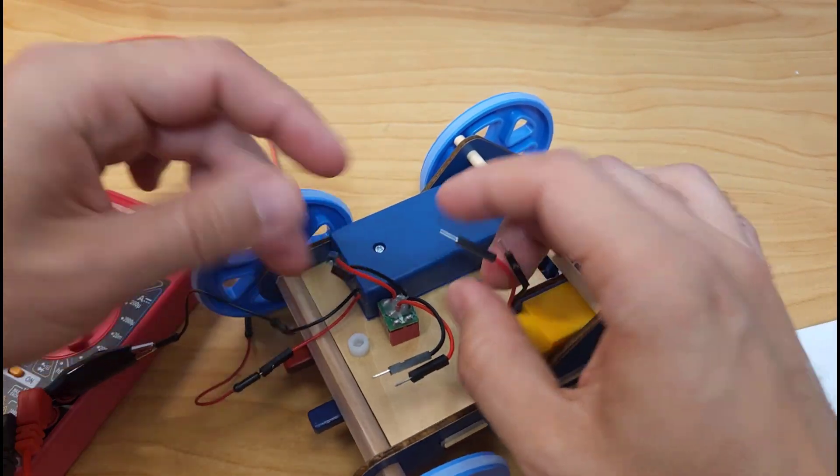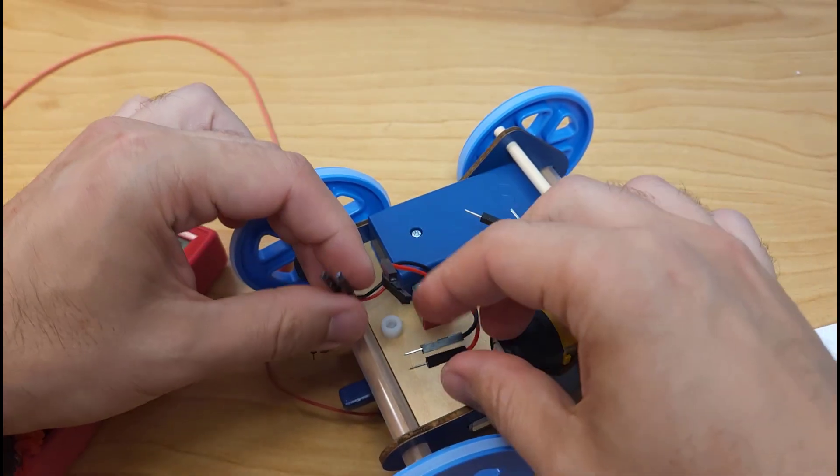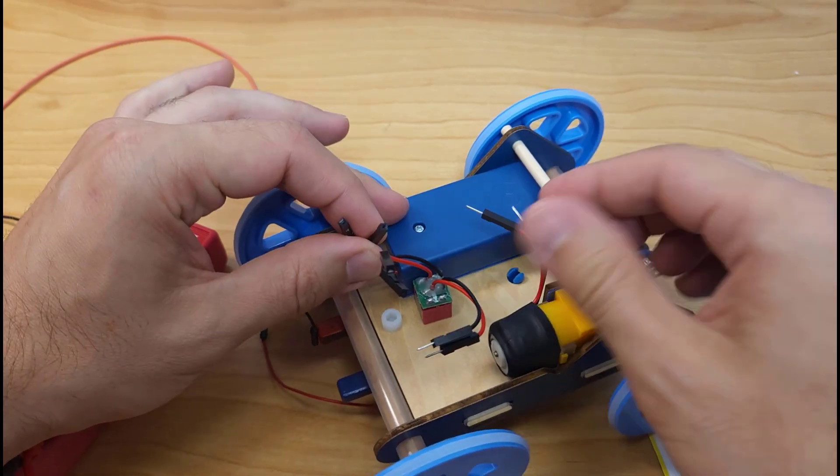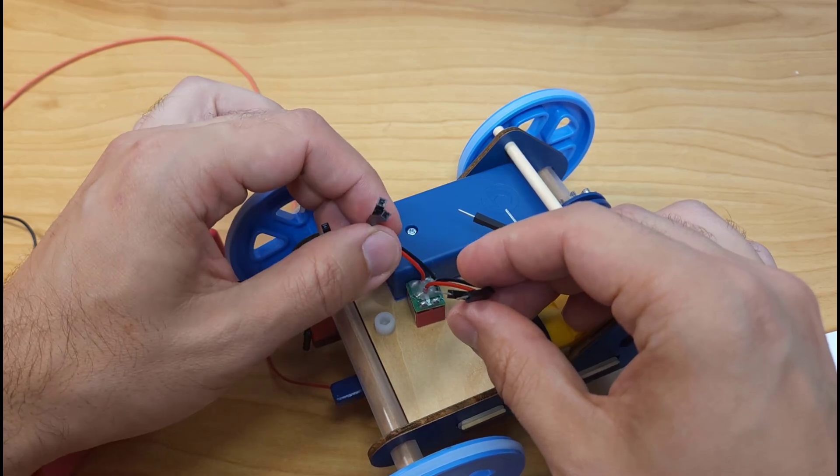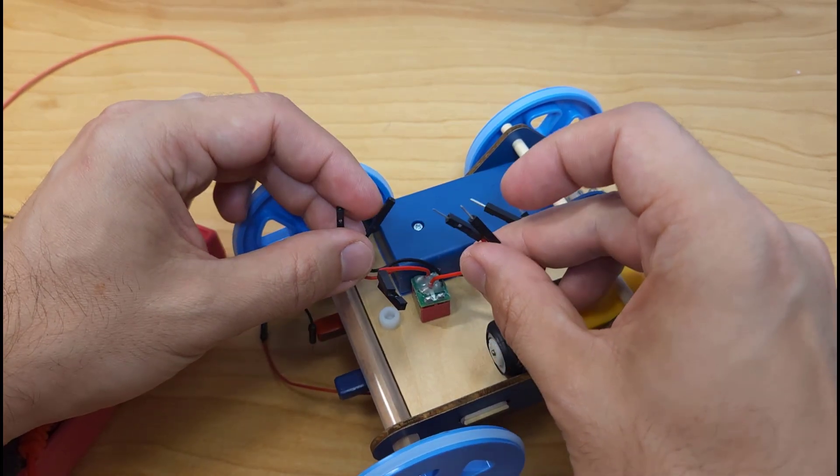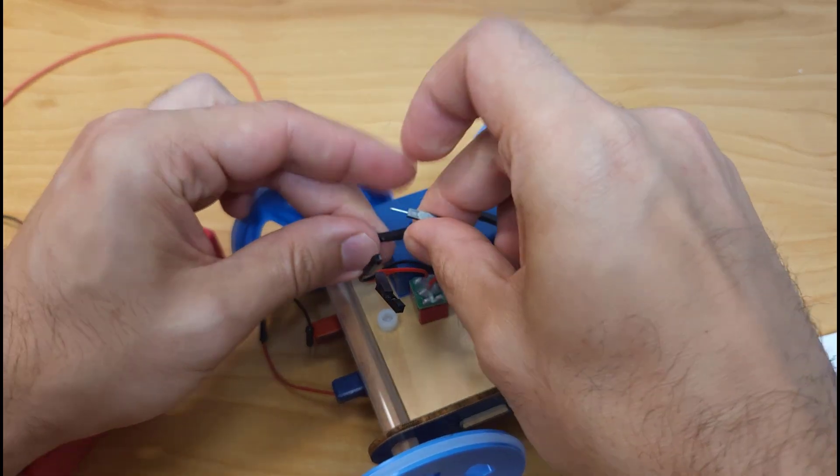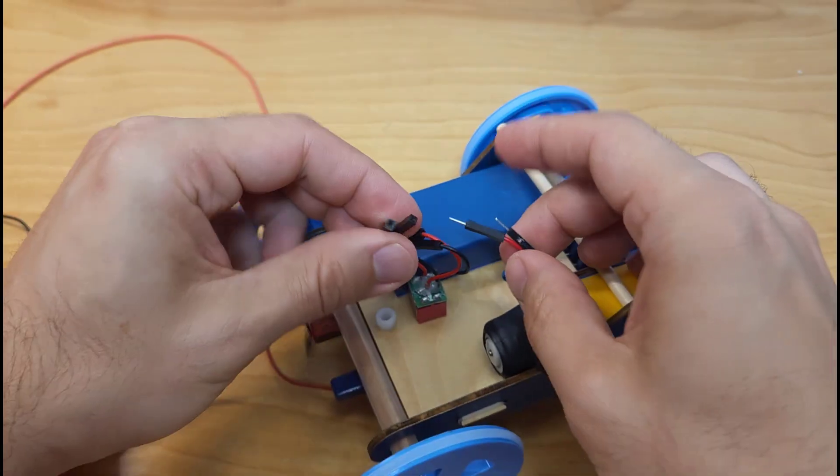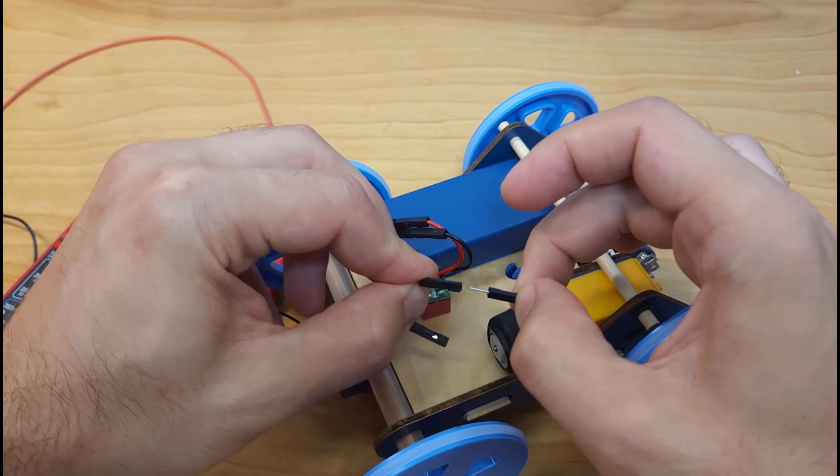The way they have this organized here is kind of convenient to help prevent kids from connecting things the wrong way. The battery pack has female connectors, and the motor has male connectors, and then the switch has one set of female and one set of male. So it's very clear that you take the male set from the switch and plug them into the female set from the battery pack, and then take the female set from the switch and plug them into the male set from the motor.